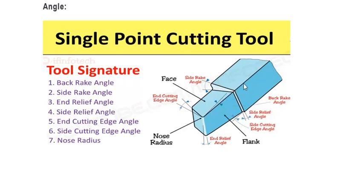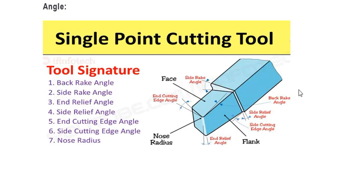The angle made with the horizontal axis is known as the back rake angle. The back rake angle is important for tool life. The limit for the back rake angle is 10 to 15 degrees — 15 degrees is the maximum back rake angle you can put in a single point cutting tool. The back rake angle is important for the tool life.